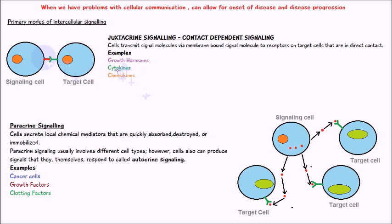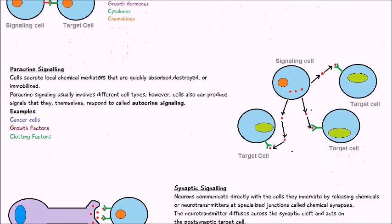Examples of juxtacrine signaling include growth hormones, cytokines, and chemokines, and it is very important in immune response. Another type is paracrine signaling, where a signaling cell releases a signal molecule that is secreted out of the cell.